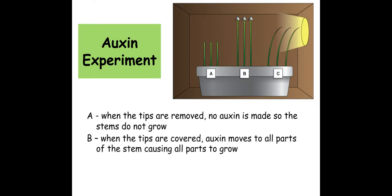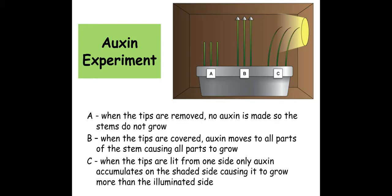In B, the shoot tips are covered up, so although auxin is made here we've still got the tip there. The auxin moves to all parts of the stem causing all parts of it to grow. Whereas in C, it's lit from one side and the auxin is being made here because I've not taken off the shoot tip. The auxin on the side of the plant where it is lit is broken down, so therefore the shaded side of that shoot grows more, forcing that shoot tip to grow towards the light.